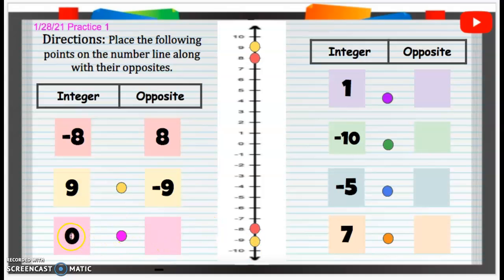Alright, and then we have zero. What's the opposite? Well, first we're going to plot zero. Perfect. Now what's the opposite of zero? Oh yeah, the opposite of zero is just zero. There is no opposite of zero. Zero is zero. That's it. That's all you can plot.